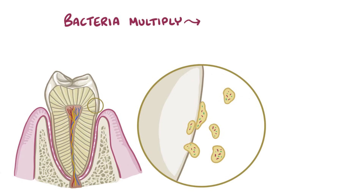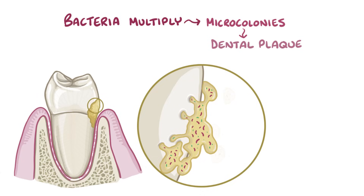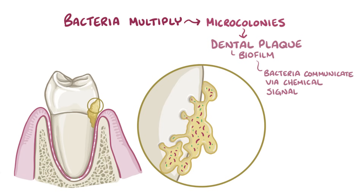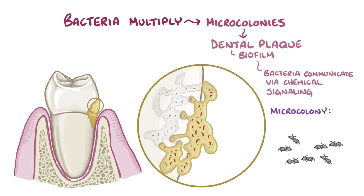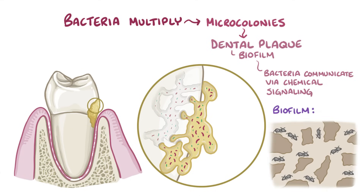Individual bacteria multiply and form small microcolonies that coalesce, creating a layer of dental plaque, which is a type of biofilm. Compared to a microcolony, the bacteria in a biofilm communicate with each other via chemical signaling, and together they create a complex system where some bacteria work on tunneling between the microcolonies and to the surface in order to bring in a steady supply of food. As an analogy, if bacteria were ants, then a microcolony would be a tiny group of ants each doing its own thing, whereas a biofilm would be an ant farm with complex tunnels and rooms, with each ant carrying out a specialized task.